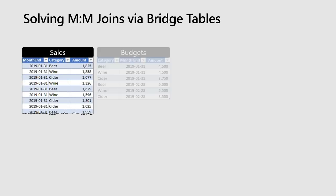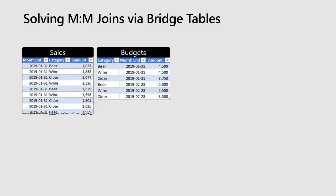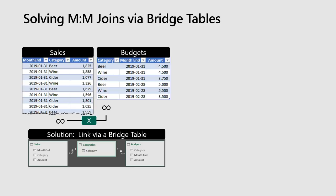How many of you have seen this? You're trying to link two tables together and it brings back the message that says you can't do that because there are multiple distinct values in each table. So here's one: we've got sales and budgets, and there's a relationship we cannot make between them because we've got multiple repeating values — beer, wine, cider repeating many times in both the sales table and the budgets table. The answer is that we use a separate table called a bridge table, where we create a unique list of categories that we can then link to both tables.